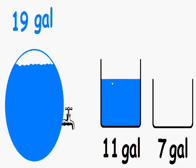So how much space do we actually have left in this 11 gallon container? Well, if we have 7 gallons of water, we know that there is 4 gallons of space that is left in this container.